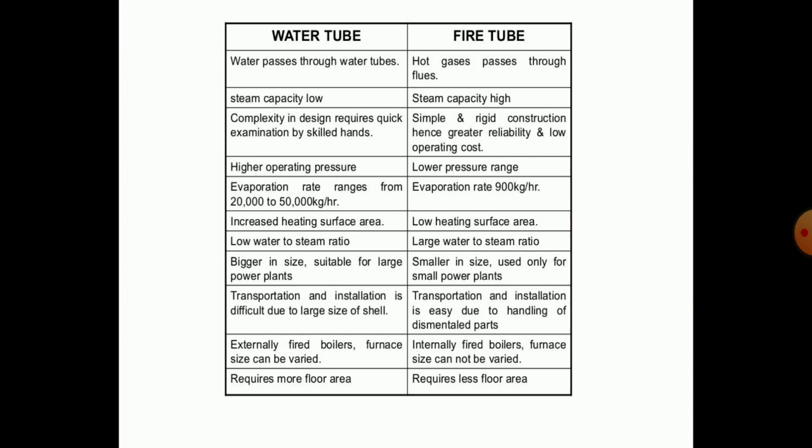Compared to water tube boilers, in fire tube boilers, hot gases pass through the tubes, and they have simple and rigid construction, giving greater reliability and low generation cost. Pressure ranges are low and evaporation ranges up to 9,000 kg per hour. They have a low heating surface area and a large water-to-steam ratio, and are smaller in size, used only for small power plants. These are the points which differentiate fire tube and water tube boilers.